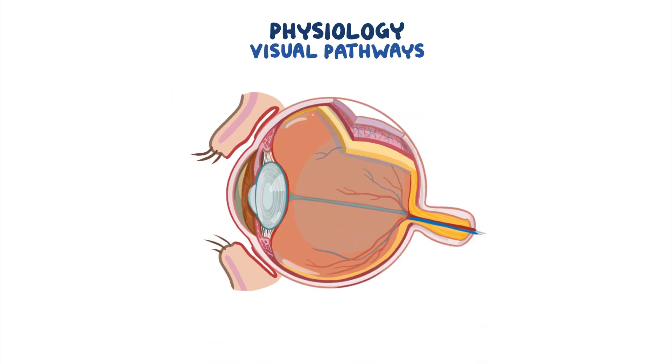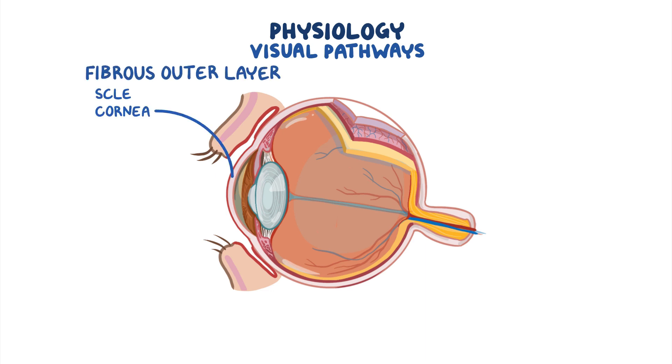The visual pathways begin in the eye. If we zoom into the wall of the eye, there is an outer fibrous layer which contains the cornea and sclera and helps control the focus and entry of light.